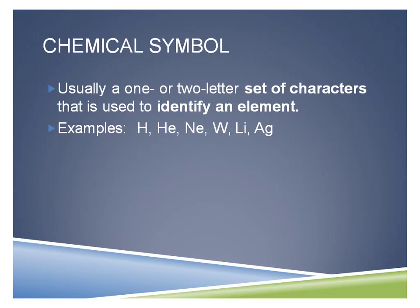Examples here are H for hydrogen, He for helium, Ne for neon. W you probably haven't noticed before — this one actually stands for tungsten, and there's no W in the word tungsten. As we're going to find out in the next few weeks, sometimes the element symbol is based on the Latin root word or where it comes from. That will be an extra credit opportunity for you to look up. Li is lithium, and Ag is silver — another unusual symbol.